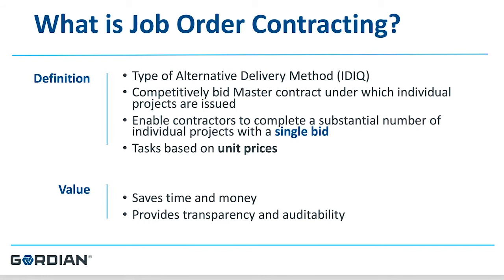Job order contracting is an indefinite delivery, indefinite quantity type of contract — IDIQ. All job order contracts are a competitively bid master contract that enables contractors to complete a substantial amount of work with one bid.